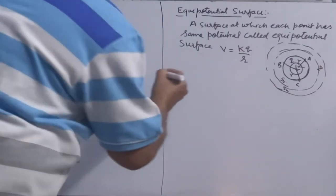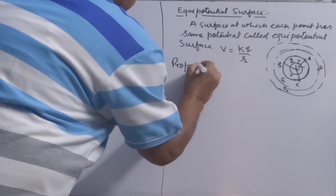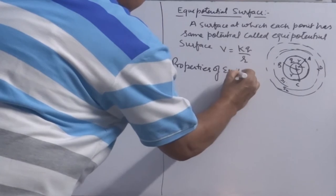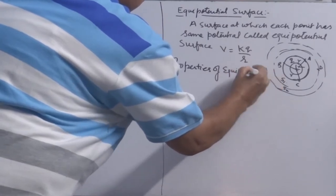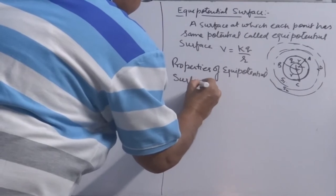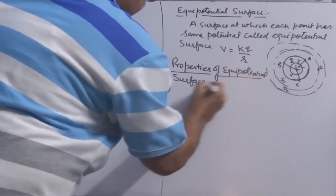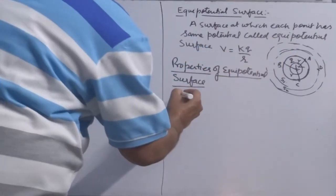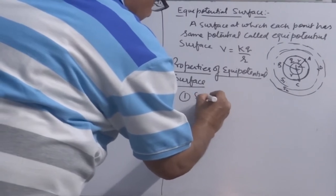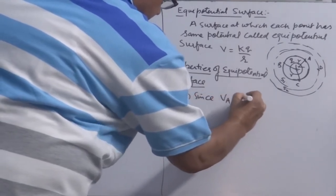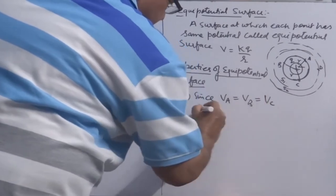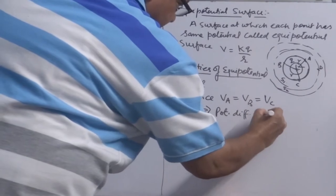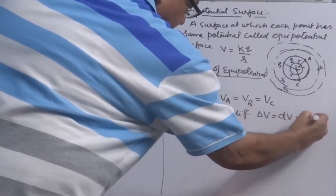Now, let's see properties of equipotential surface. What are the properties? As we say potential of point A and B are same. Since VA is equal to VB is equal to VC. It means potential difference delta V or DV in differential format is 0.